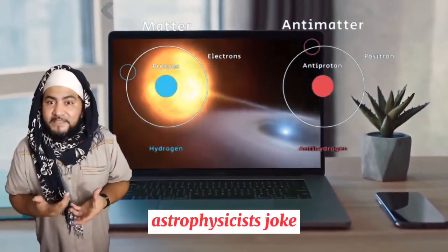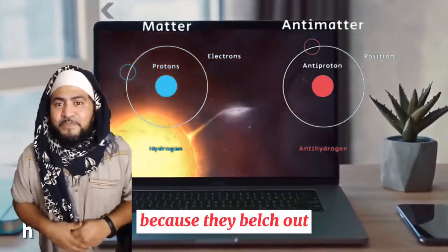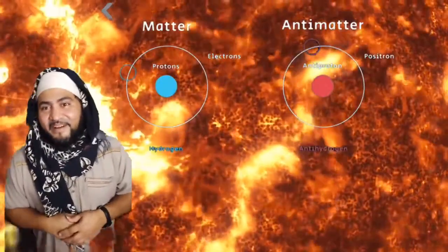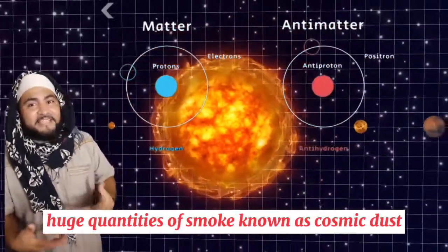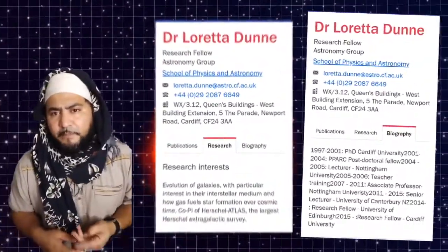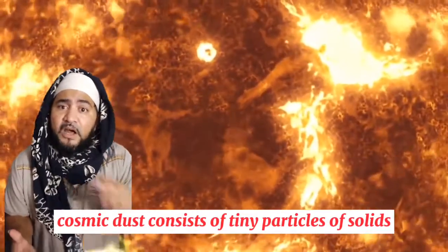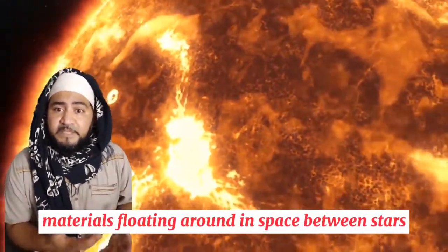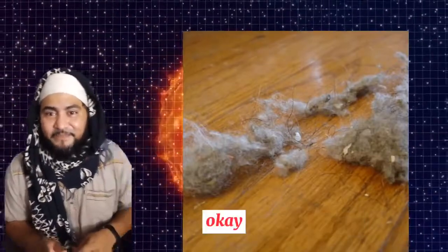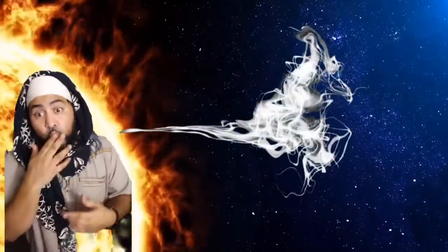When astrophysicists joke, they say supernovas had bad habits, because they belch out huge quantities of smoke known as cosmic dust. Dr. Loretta Dunne from Cardiff University describes cosmic dust by saying: Cosmic dust consists of tiny particles of solids and materials floating around in space between stars. It's not like the dust in your house, but it's more like cigarette smoke.